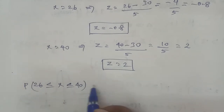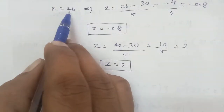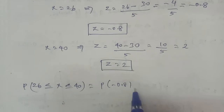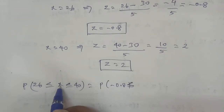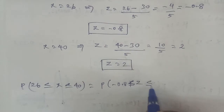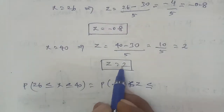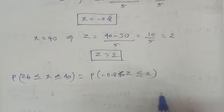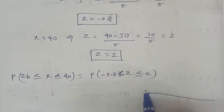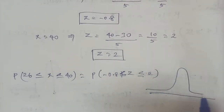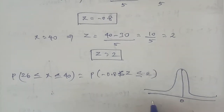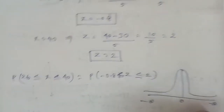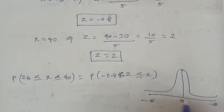That is, the probability is equal to P(-0.8 ≤ Z ≤ 2). To visualize this, we draw the normal distribution graph, which is a bell-shaped curve. The mid value is zero in the middle, ranging from minus infinity to plus infinity. The region from minus 0.8 to 2 is the area of interest.